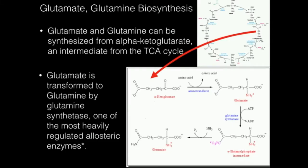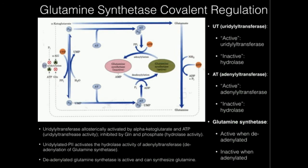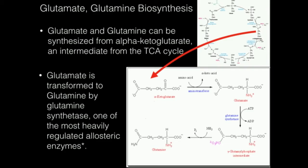To remind you briefly what glutamine synthetase does: it converts glutamate to glutamine through a two-step process using ATP. It phosphorylates glutamate to make a gamma-glutamyl phosphate intermediate, and then ammonia displaces the phosphate to make glutamine. Glutamine synthetase is one of the most heavily regulated enzymes because it reacts with ammonia, and ammonia is toxic.